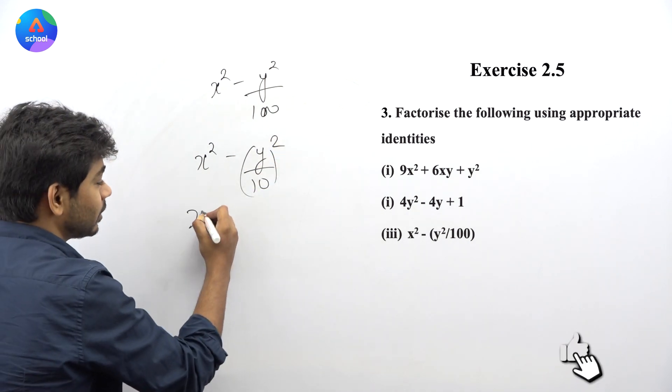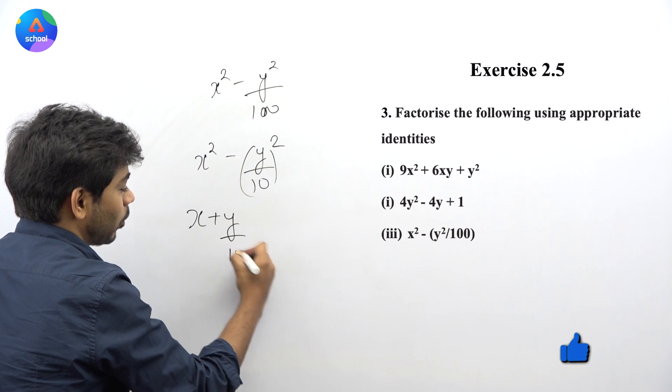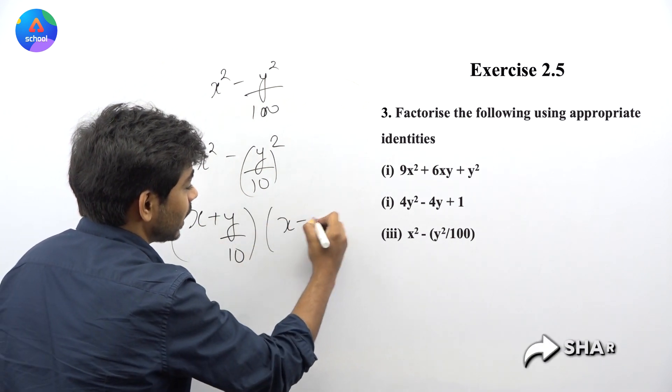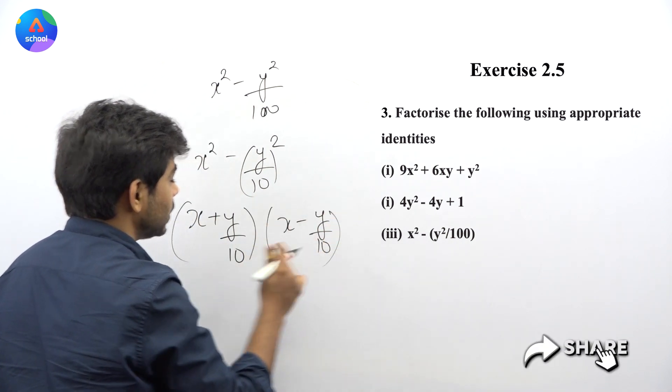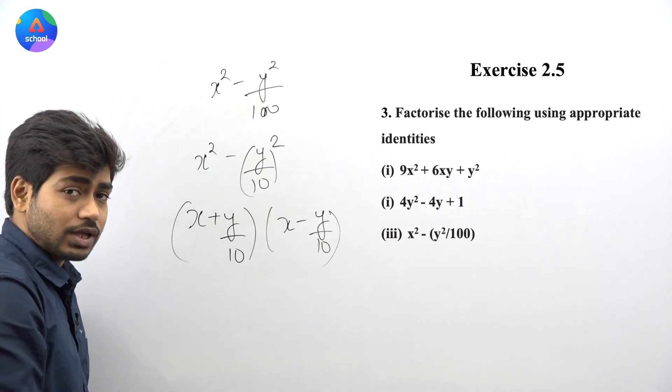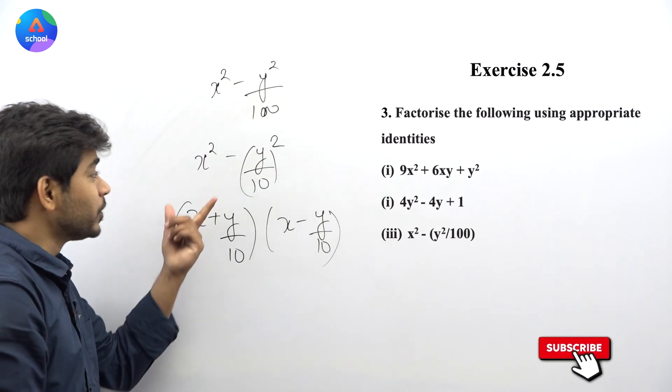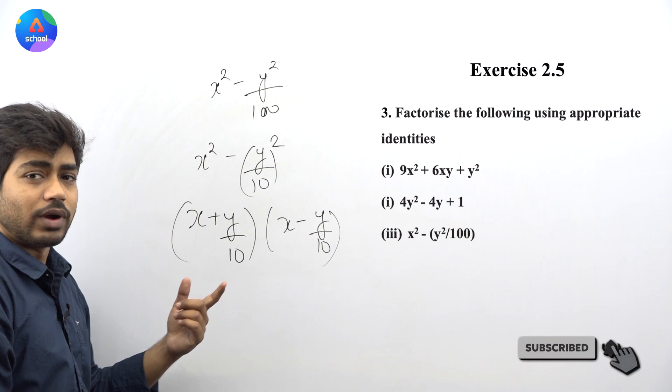We can write this as (x + y/10) times (x - y/10). Using the identity a² - b² equals (a + b)(a - b), we get the factorization of x² - y²/100.